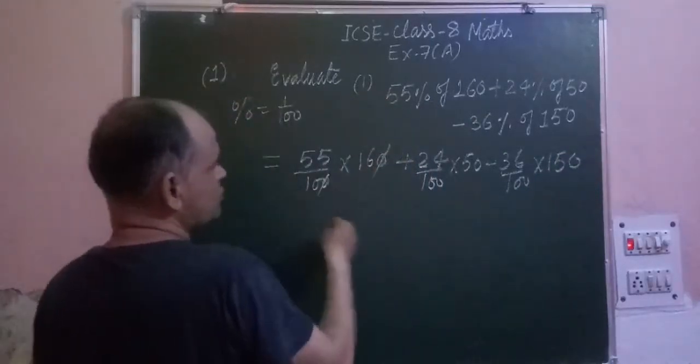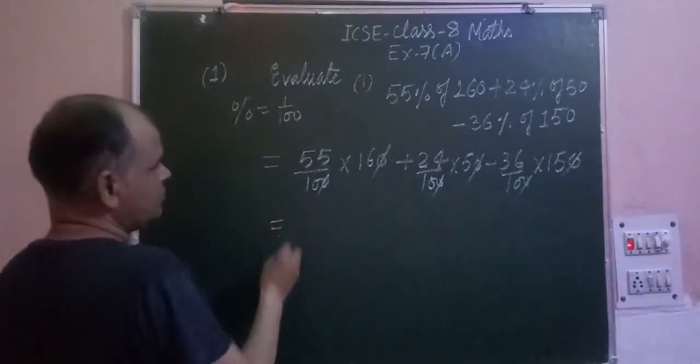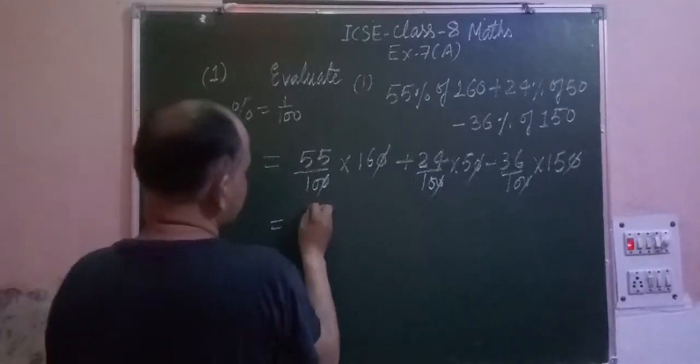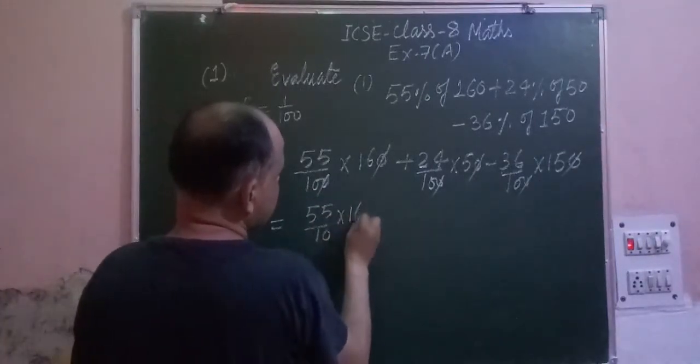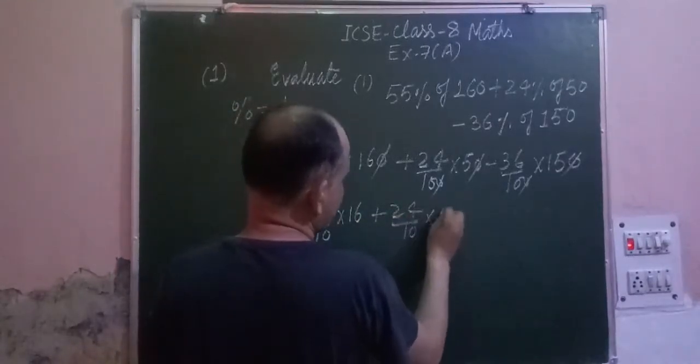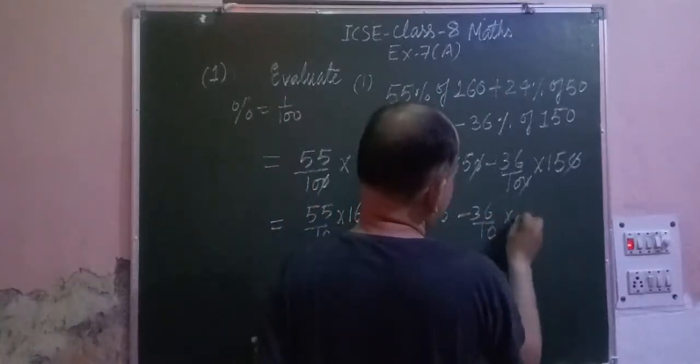So we cross out zeros on both sides. We cancel zero from numerator and denominator, so we got 55 upon 10 into 16 plus 24 upon 10 into 5 minus 36 upon 10 into 15.